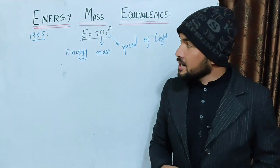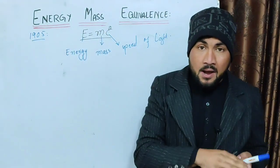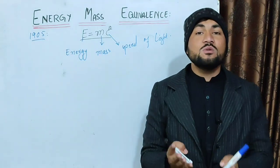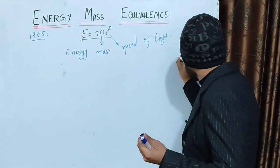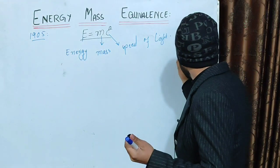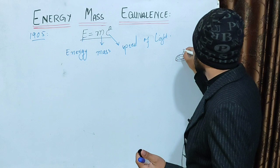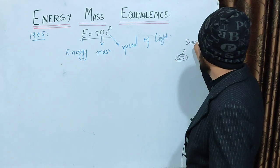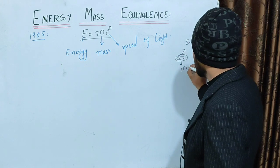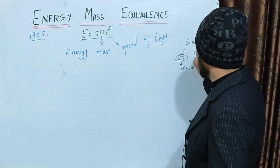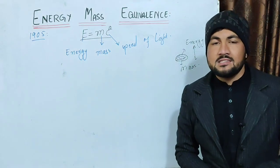Einstein announced that mass and energy are related in E is equal to mc squared. For example, think of a coin — one side is energy, the opposite side is mass. This means mass and energy are the same coin, just different sides.